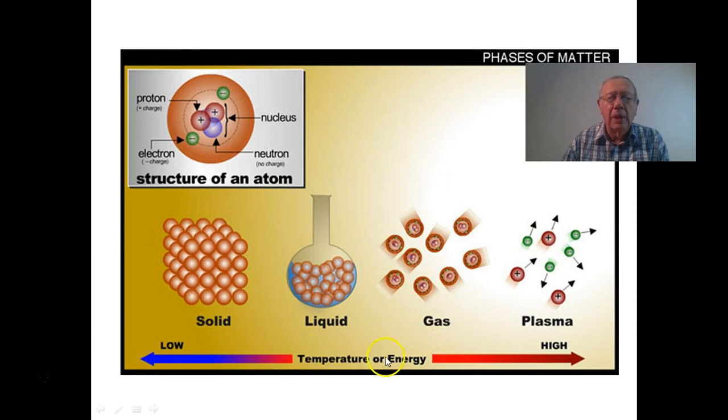And as you can see here that it occurs when substances, particularly gases, are under very, very high temperatures. And what happens there is that the electrons tend to separate from the rest of the atom. So there's, if you like, a soup of electrons and positively charged particles.